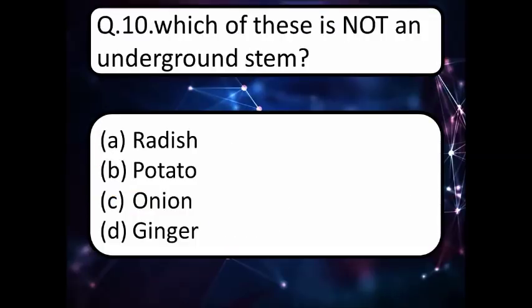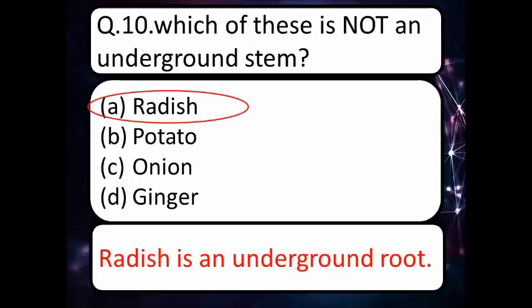Our next question is: which of these is not an underground stem? Read the options carefully and think about the correct answer. The correct answer is A, radish. Radish is an underground root, not a stem.